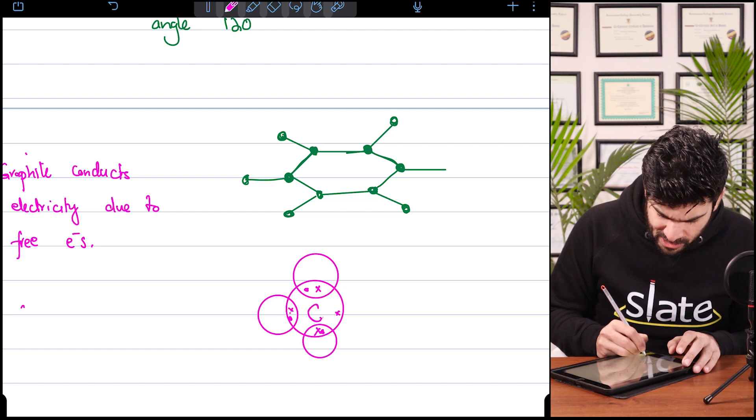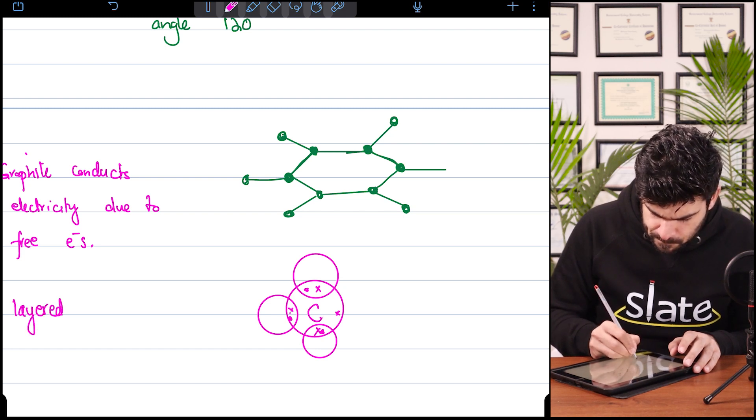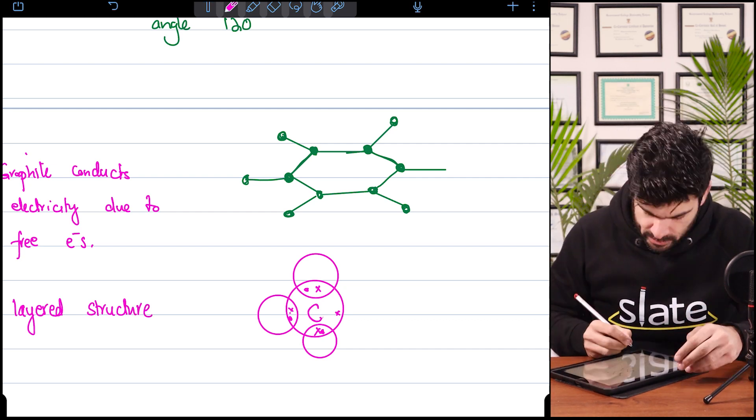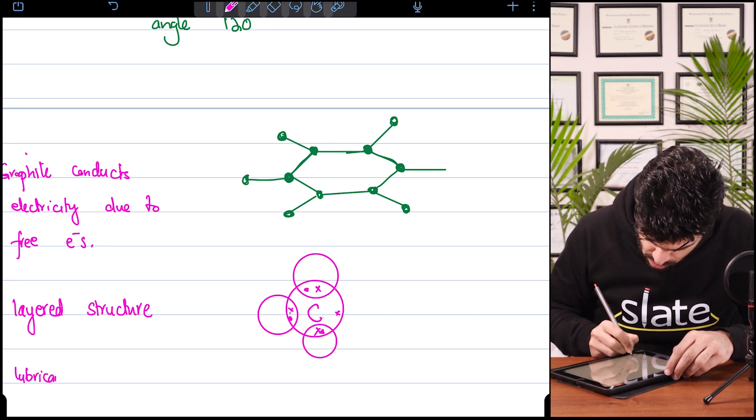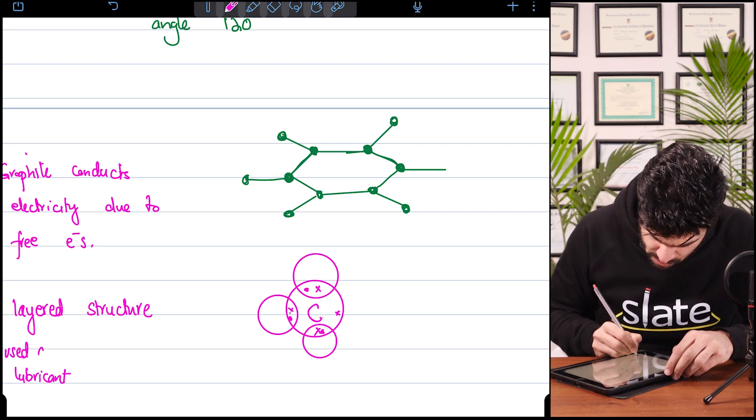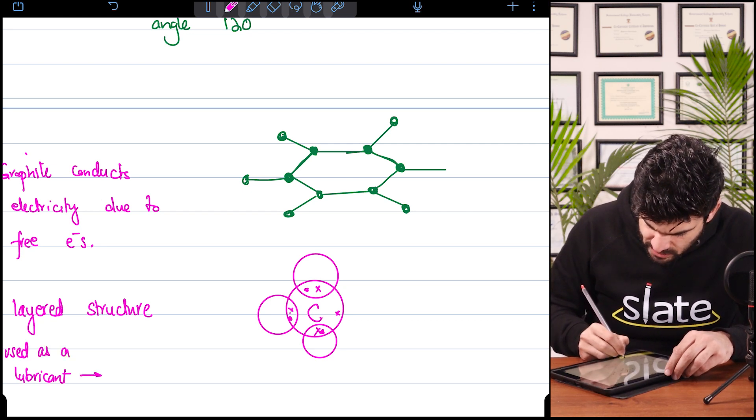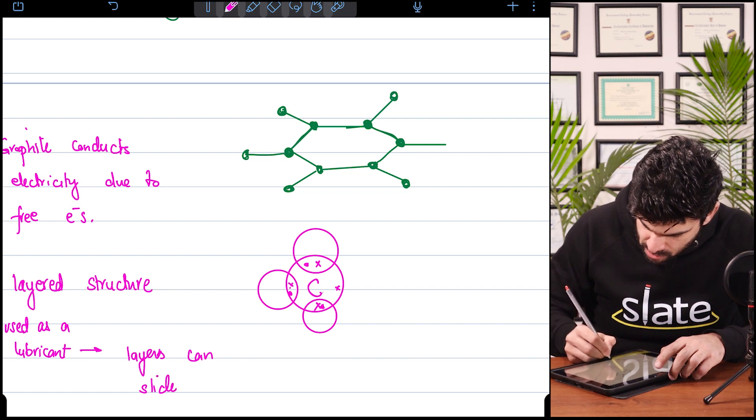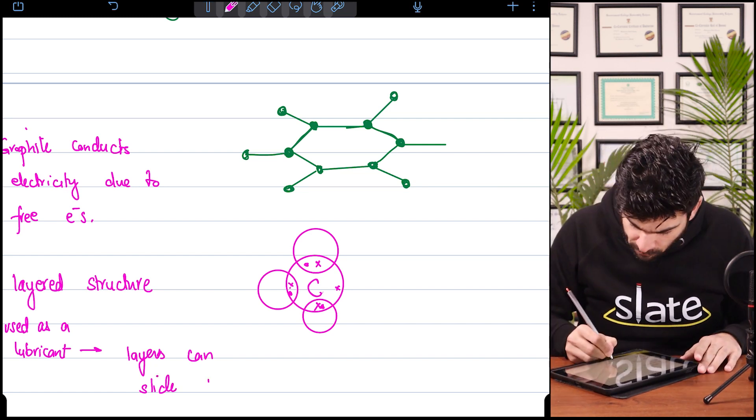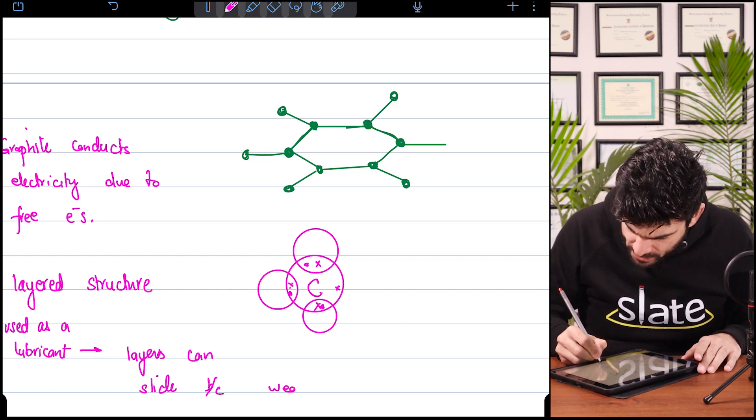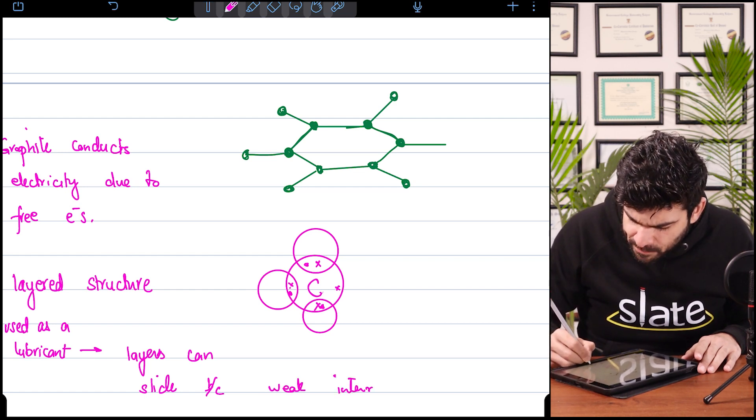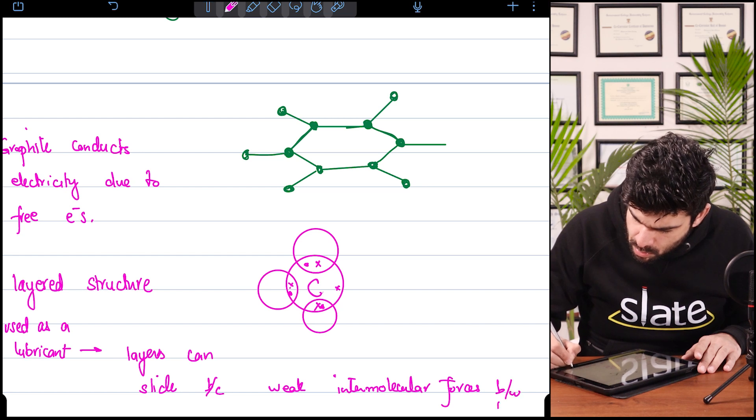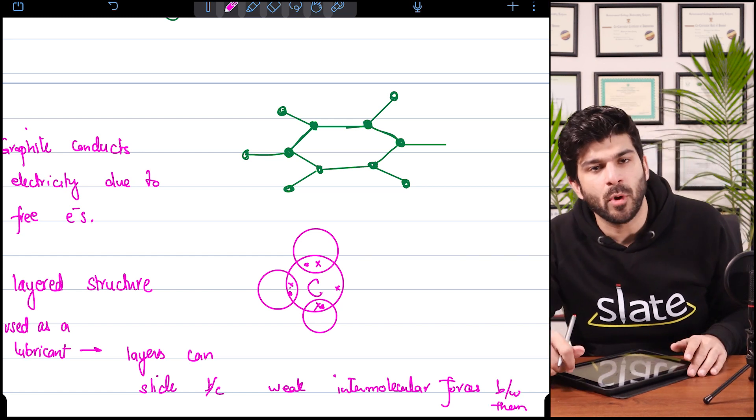They all have free electrons. Now they have a layered structure. Graphite is also used as a lubricant. Why used as a lubricant? Because layers can move, layers can slide this way, because of weak intermolecular forces between them.